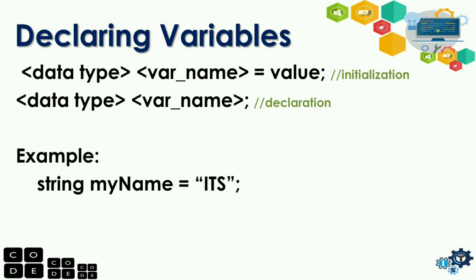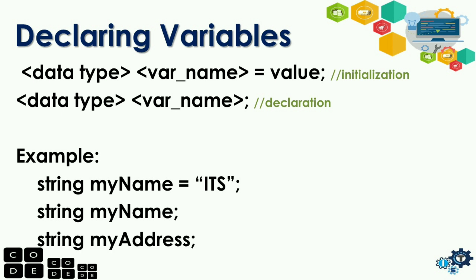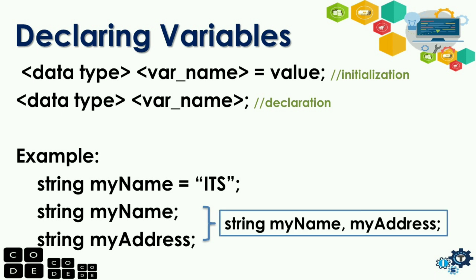Example: we have 'string myName = "ITS";' — that is an example of initialization. Next, 'string myName;' and 'string myAddress;' — those are examples of declaration. Those last two declarations can also be written as: 'string myName, myAddress;' — that is also valid, because myName and myAddress share the same data type, which is string.